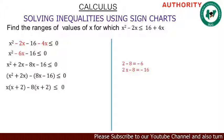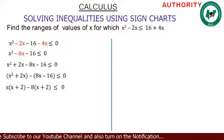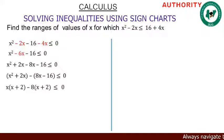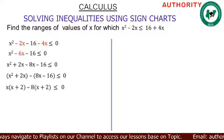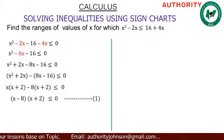In minus 8x minus 16, what do they have in common? It should be minus 8. Factoring out minus 8 from minus 8x leaves x, and from minus 16 leaves plus 2 — so minus 8 times x gives minus 8x, and minus 8 times plus 2 gives minus 16. Now we pick the numbers outside the brackets and combine them with one of the common bracket expressions, giving us (x minus 8)(x plus 2), less than or equal to zero.